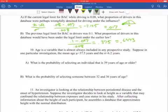Question 10. Age is a variable that is almost always included in any prospective study. Suppose one particular investigation, the mean age was 37.5 years and the standard deviation of 6.2 years. What is the probability of selecting an individual that is 39 years of age or older? So, our problem is set up very similar to what we're doing. We're trying to find out the probability of selecting someone at the age 39 years or older.